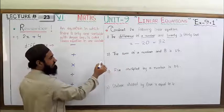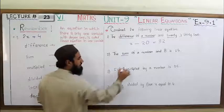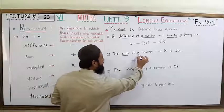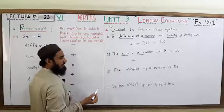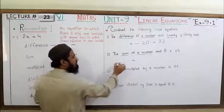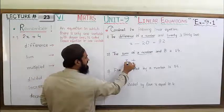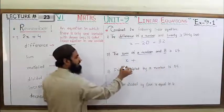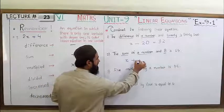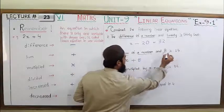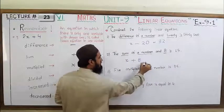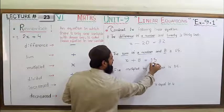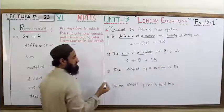Doosra statement: 'The Sum of a number and 8 is 15.' Sum — maine kaha, plus ki sign ke liye. 'Of a number' — koi bhi ek number jo unknown hai, hume maloom nahi, to usse hum X ke zariye show karenge — variable ke zariye. 'And 8' — aur usme 8 ko plus kar denge. 'Is' — equal to ke liye. 'Fifteen' — fifteen ko same utar denge. Is tareeqe se yeh linear equation construct ho gayi: X + 8 = 15.